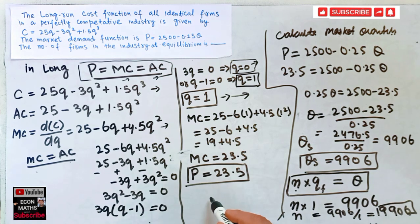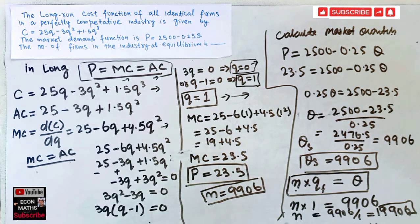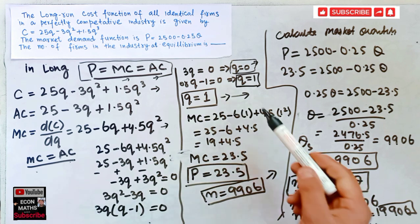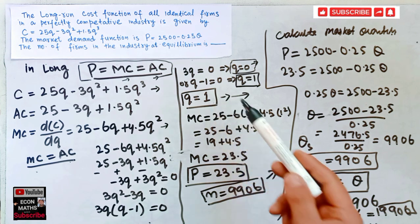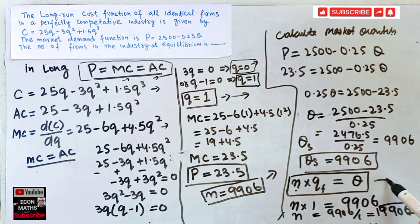So the number of firms is 9906. The correct answer is 9906 firms, because every individual firm is supplying one unit, and N times the number of units supplied by each firm equals total supply. This is straightforward to comprehend.